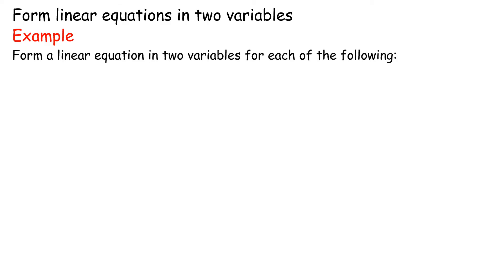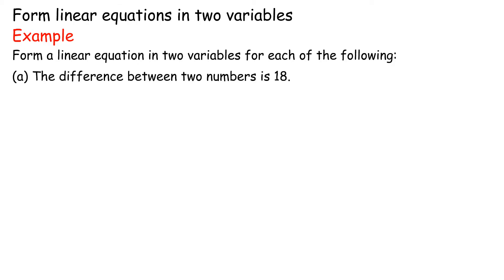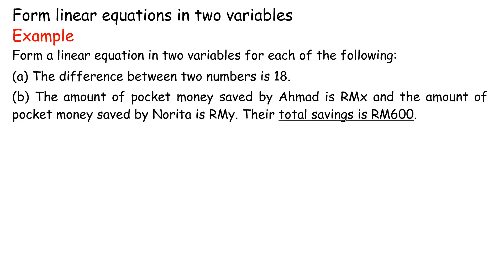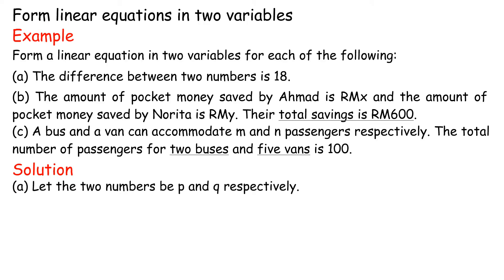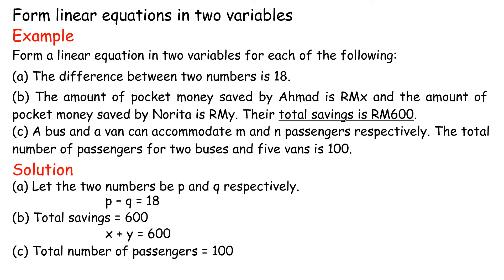Form linear equations in two variables. Example: form a linear equation in two variables for each of the following. (a) The difference between two numbers is 18. (b) Ahmad's savings is RMx and Narita's is RMy; their total savings is RM600. (c) A bus and a van can accommodate m and n passengers respectively; two buses and five vans carry 100 passengers. Solution: (a) p - q = 18. (b) x + y = 600. (c) 2m + 5n = 100.